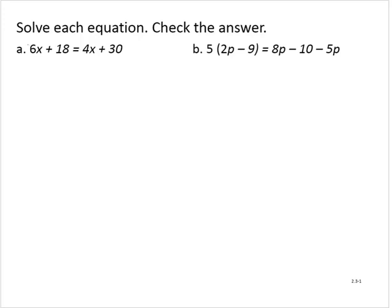Solve each equation and check the answer. The first equation is: 6x plus 18 is equal to 4x plus 30.